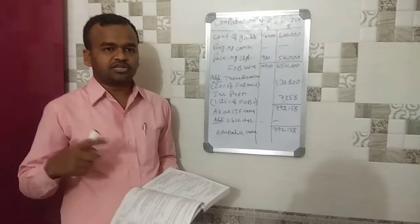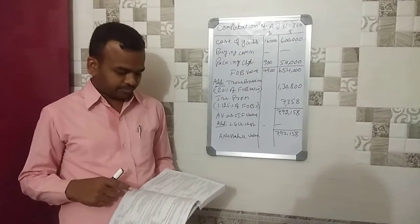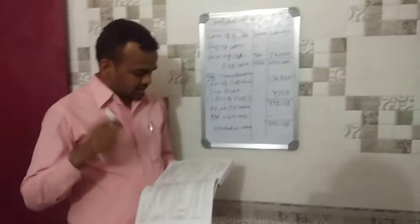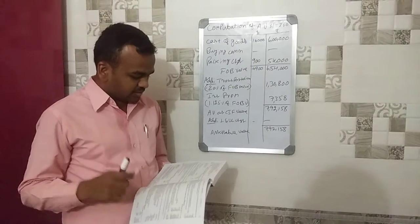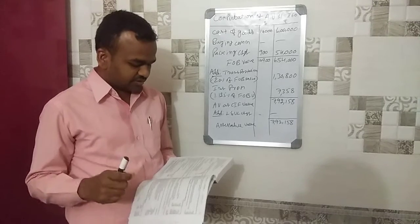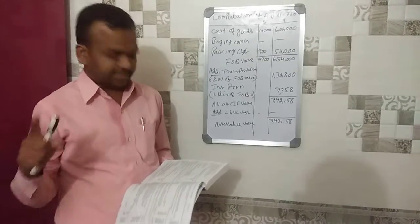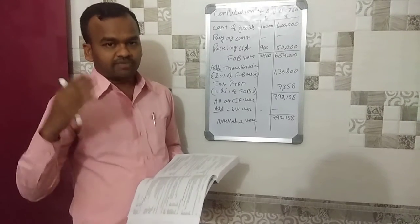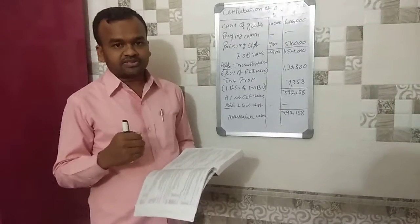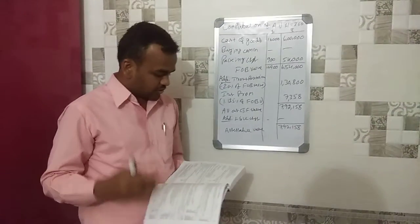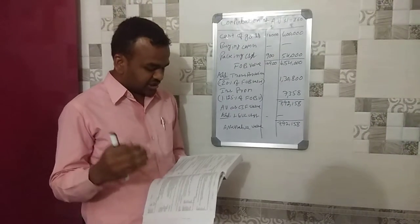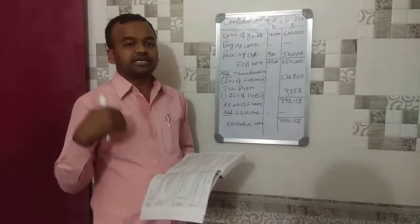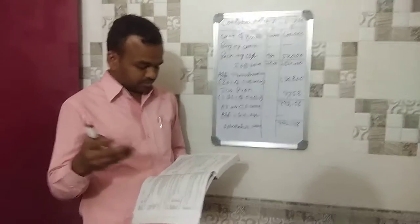Welcome my dear friends. Let us look at the second problem. An Indian dealer imported goods worth ten thousand dollars. However, the following expenses are not included in it. Buying commission paid to an agent of the Indian dealer: two hundred dollars.